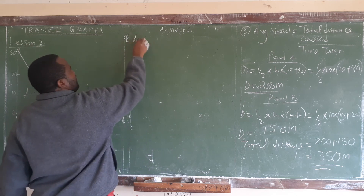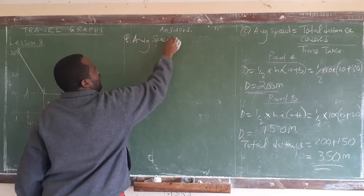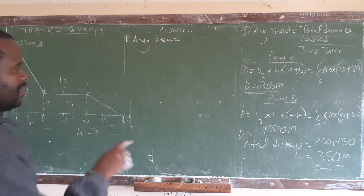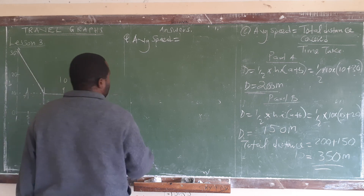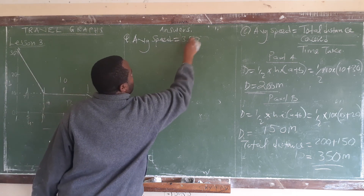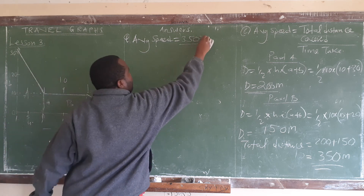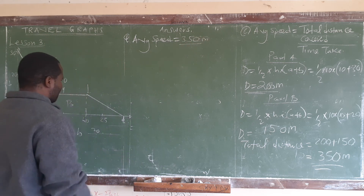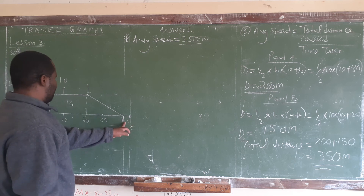Average speed equals total distance divided by total time. Our total distance is 350 meters and our total time taken is 30 seconds. So average speed equals 350 divided by 30.